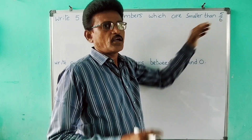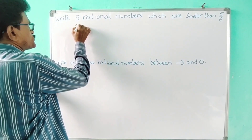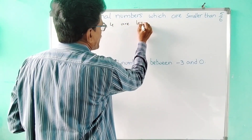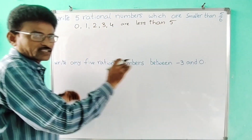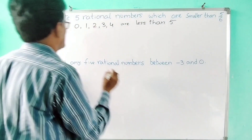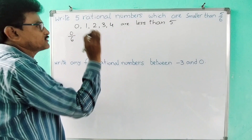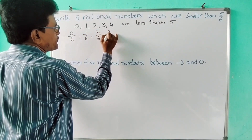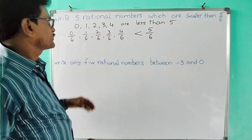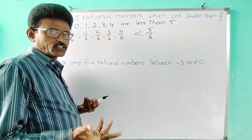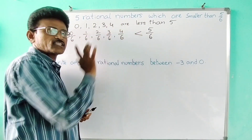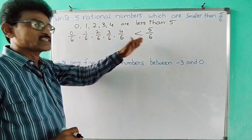The rational number denominator is six. Now first I am writing some integers: zero, one, two, three, four. These are whole numbers and also integers. All these are less than five — these numbers are less than five, they follow the left side of five. Now I am going to make like fractions with denominator six: zero by six, one by six, two by six, three by six, four by six. All these rational numbers are less than five by six. If the numerator is less than five, then automatically the number is less than five by six.